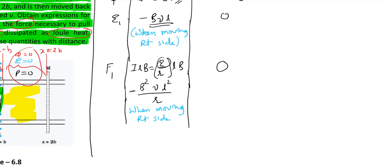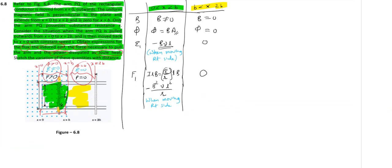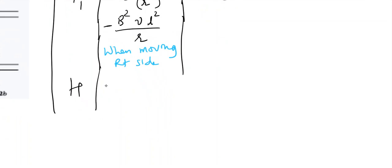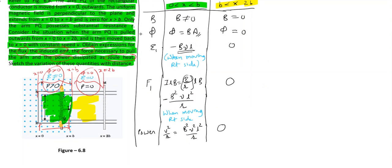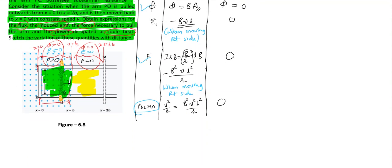Now Joule heat. Let me call it power. Power is v² by r, so it is b²·v²·l² by r. It has nothing to do with positive or negative sign. But again, power will be 0 if you are outside. What is left now? Flux we have considered, force is also considered, power is also taken here. Joule heat is power into time will give you Joule heat, so I am not mentioning it.